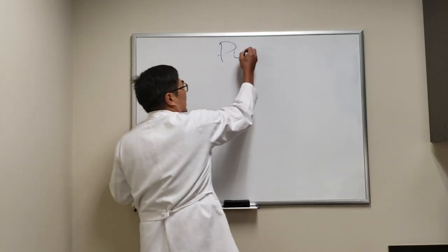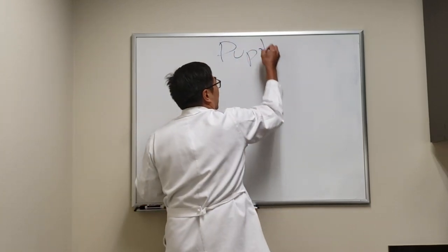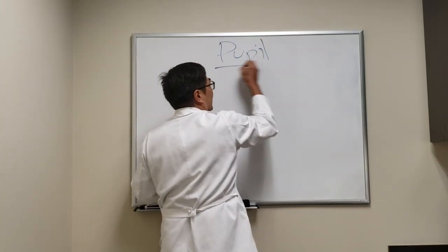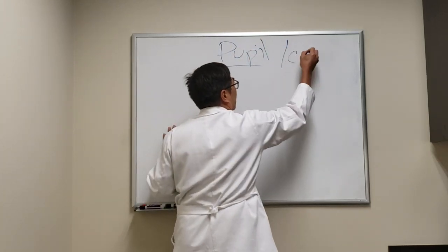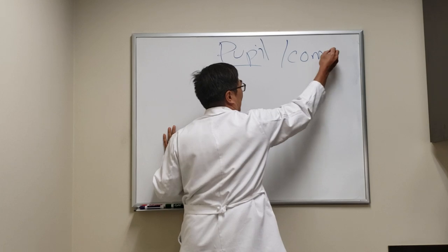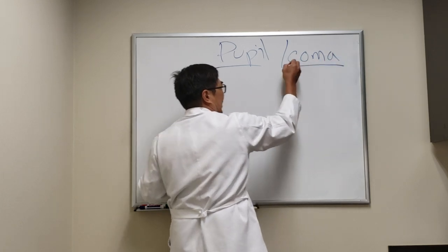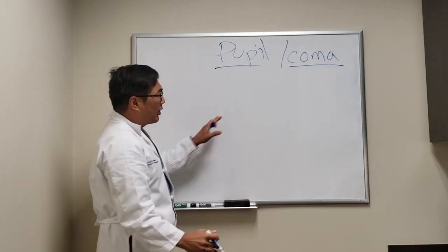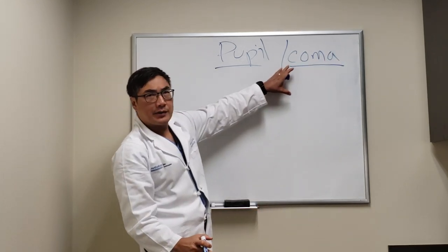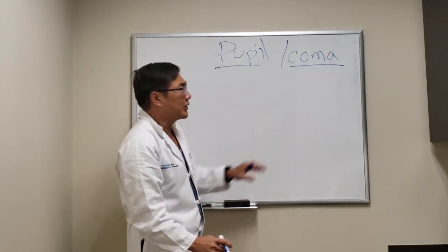Today we're going to be talking about the pupil in relation to something that ophthalmologists don't see in the clinic obviously, but might be called to the floor for in a patient who is comatose.